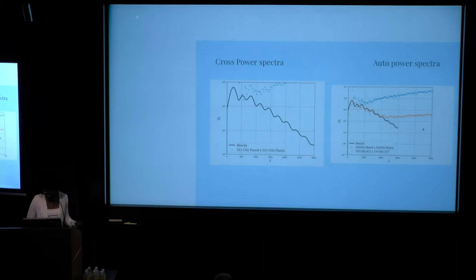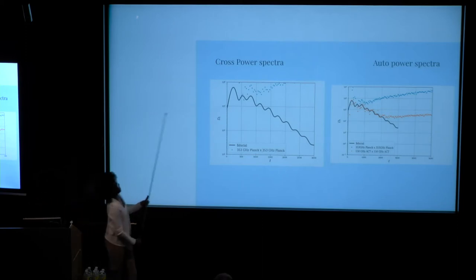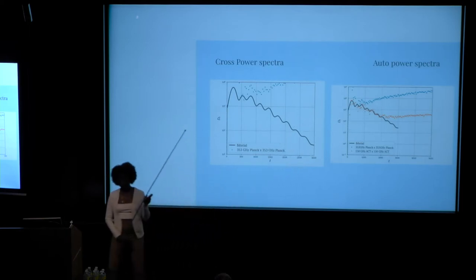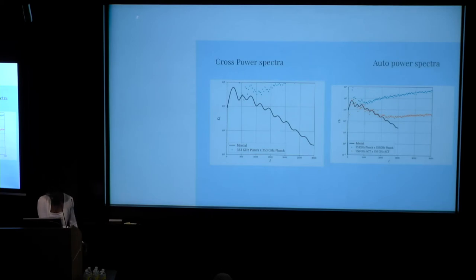As you can see, the colored line is the Planck one, and the black one is the CMB signal, and the orange one is the ACT signal. So as you can see, the Planck signal is higher than the ACT one, and that is because at higher frequency dust is much brighter.